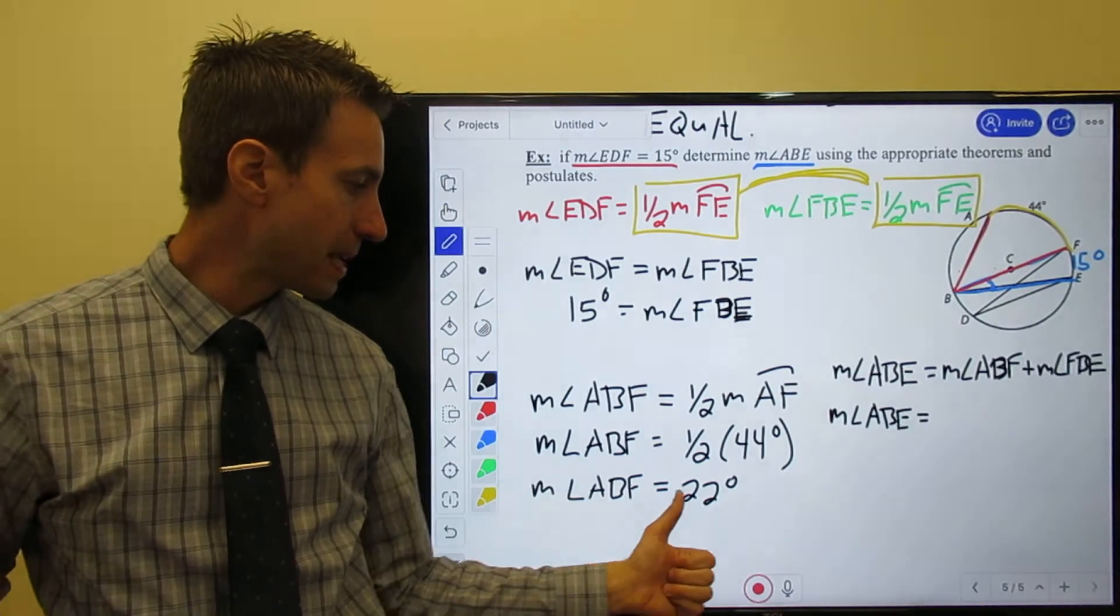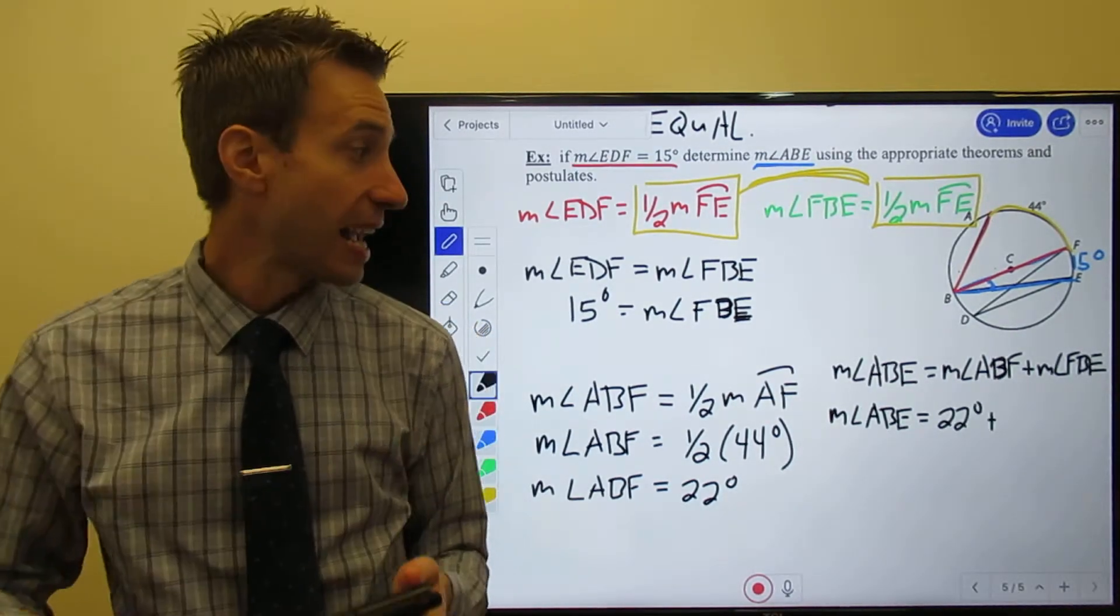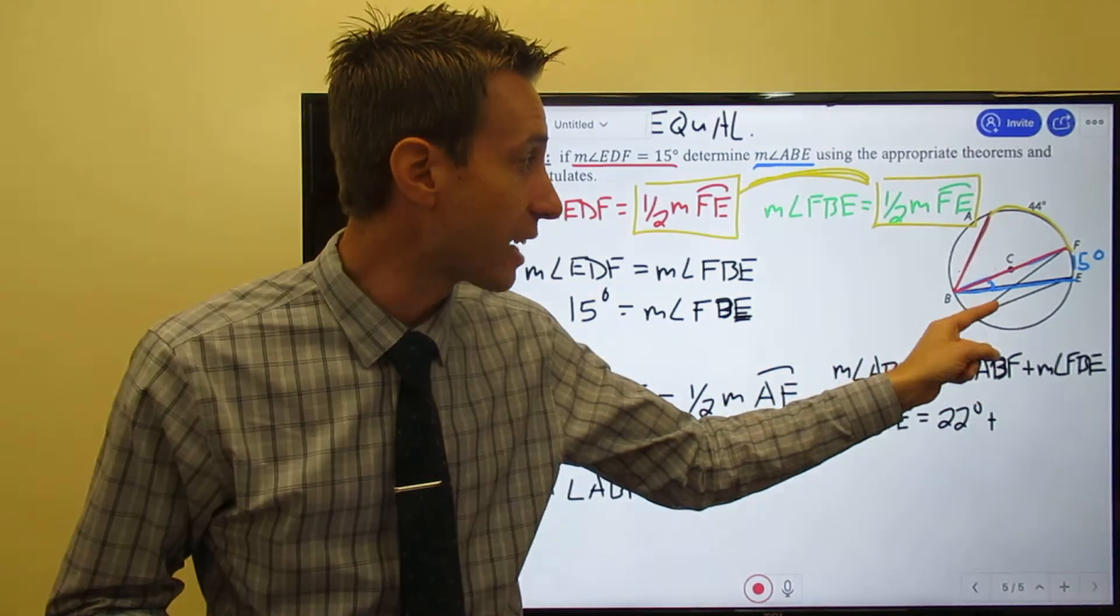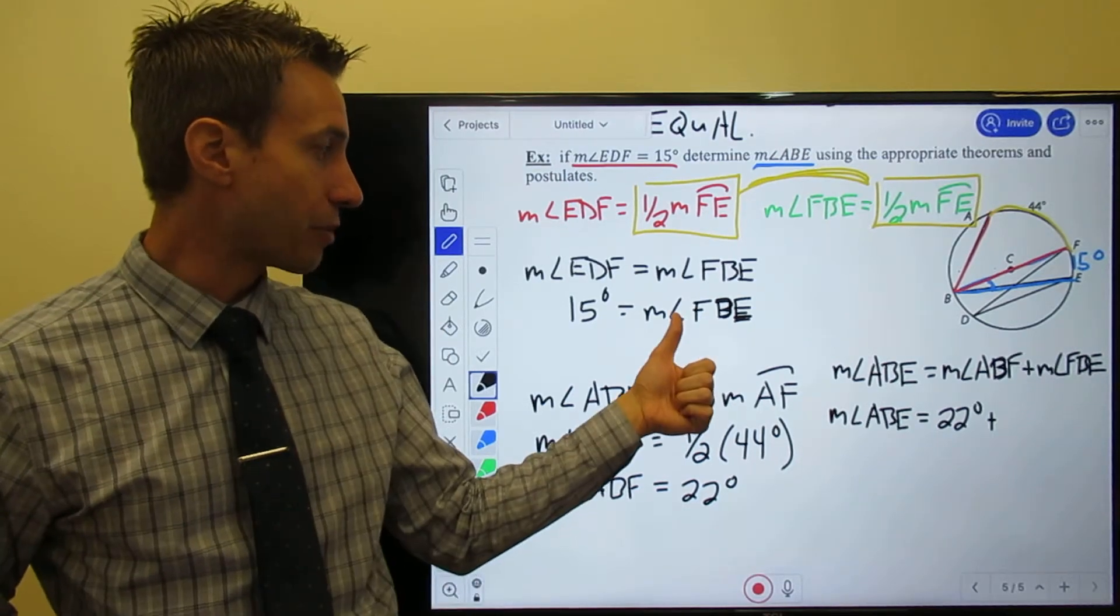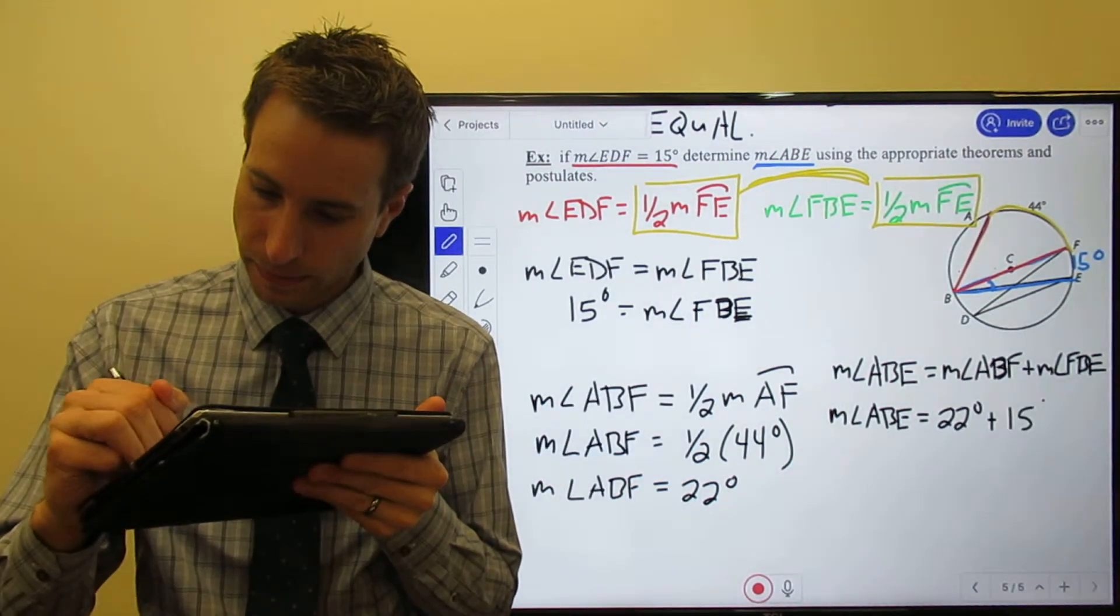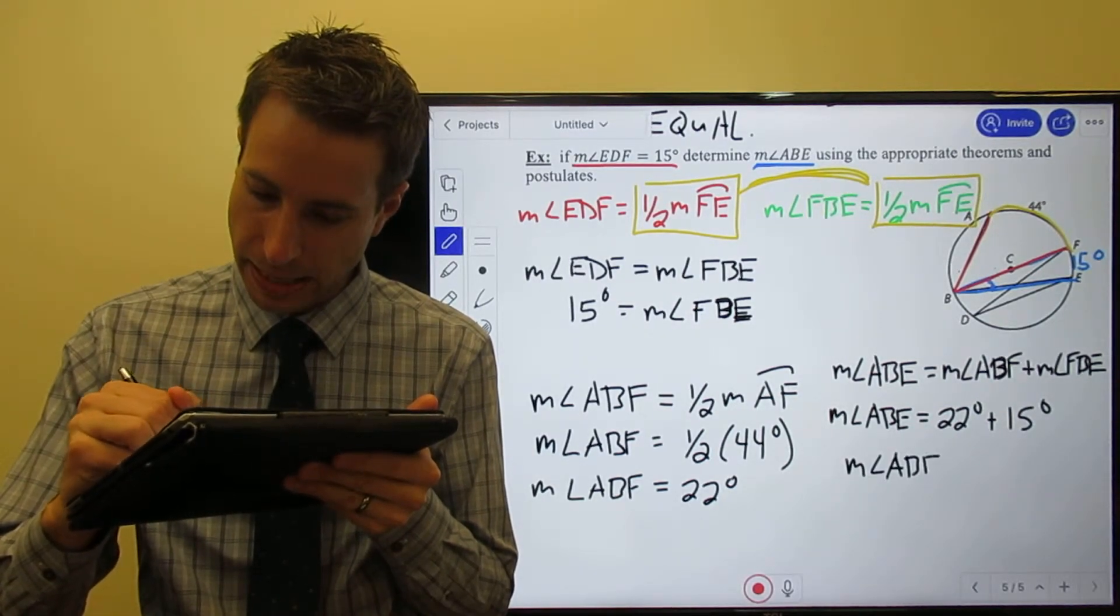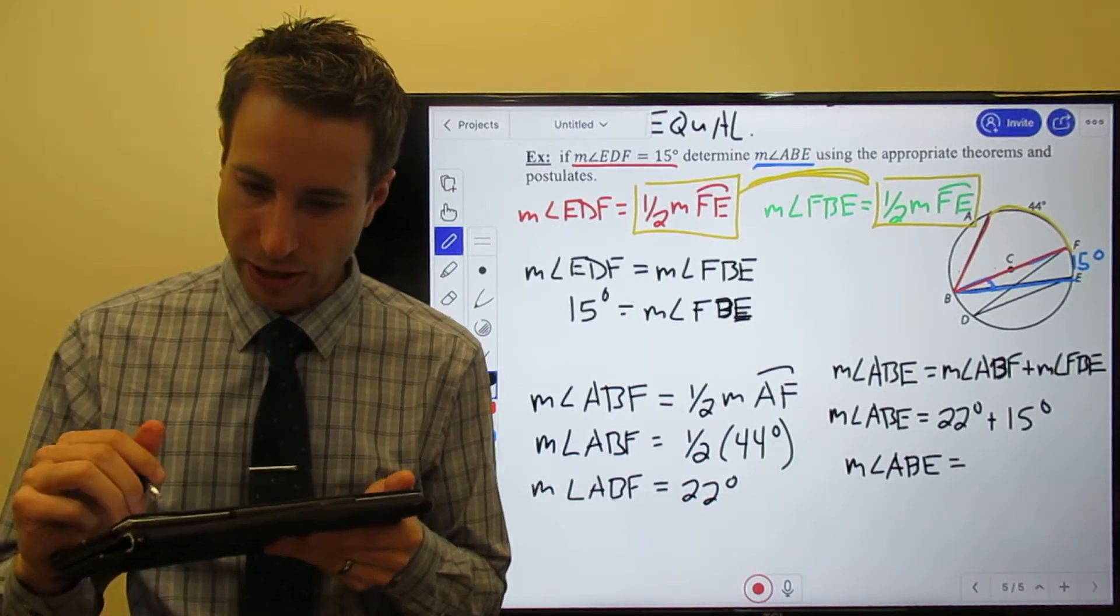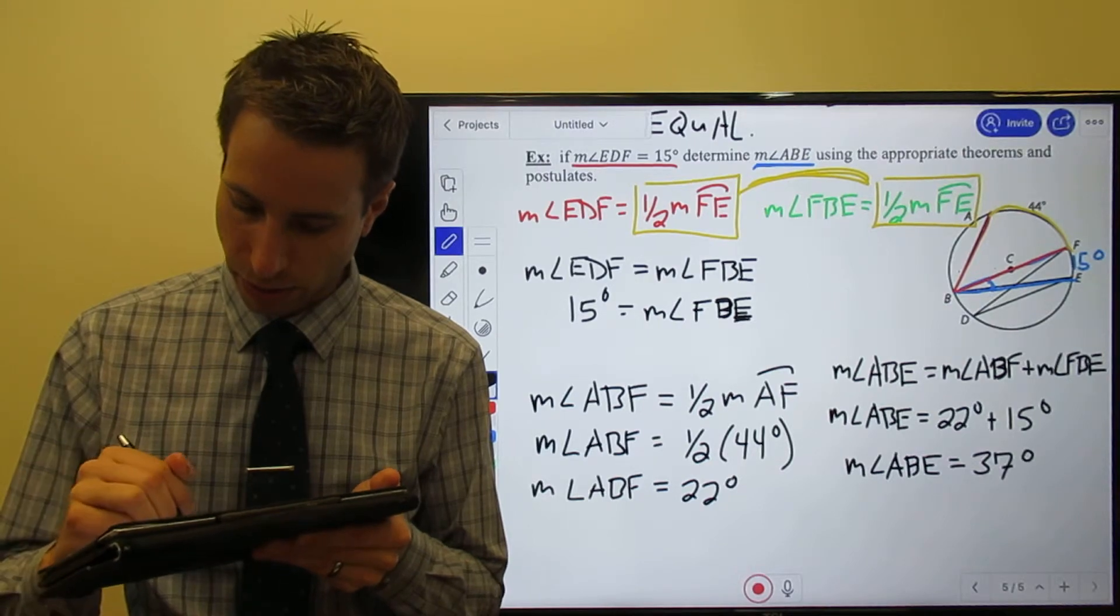I just found ABF is 22. And thanks to both of these angles having the exact same arc measure, I know that FBE is 15 degrees. So the measure of angle ABE is 22 plus 15, which is 37 degrees.